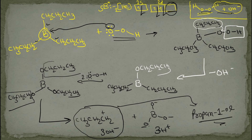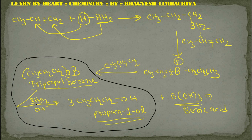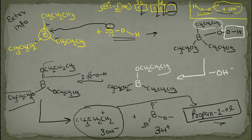So finally we are getting propan-1-ol. This is how propan-1-ol is obtained from this mechanism. Remember all this — it is provided as extra information. In the textbook, this step is given directly without elaboration. I have explained it in detail here, showing how 3H2O2 are added. Markovnikov's rule is violated.